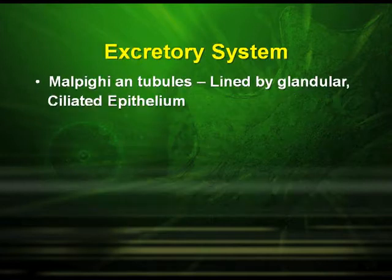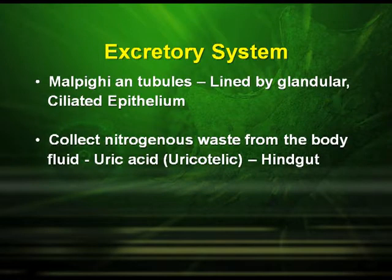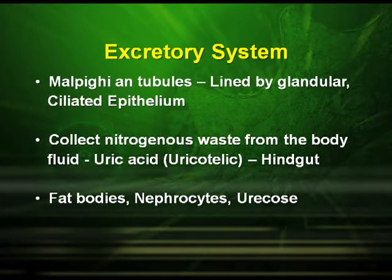The excretory system: the excretory organs are the Malpighian tubules, which are lined by glandular ciliated epithelium. They collect nitrogenous waste from the body in the form of uric acid, making cockroaches uricotelic organisms, and then pass it to the hindgut. The fat bodies, nephrocytes and uricose glands are also involved in the process of excretion.